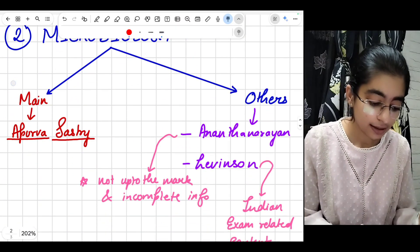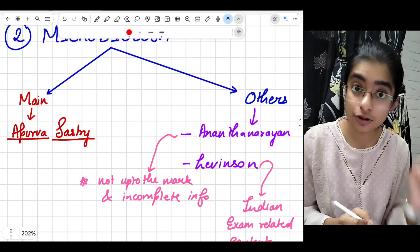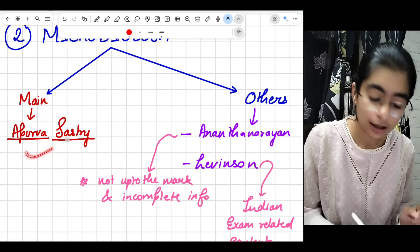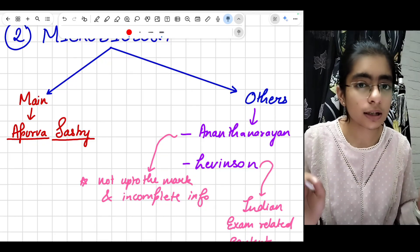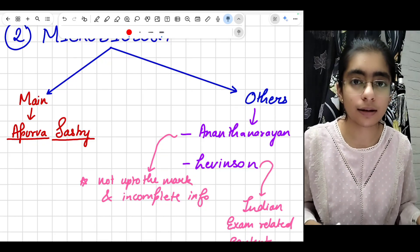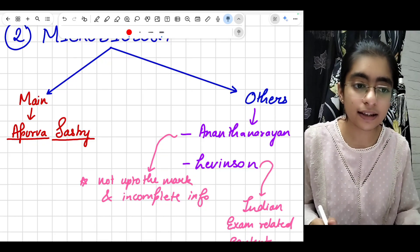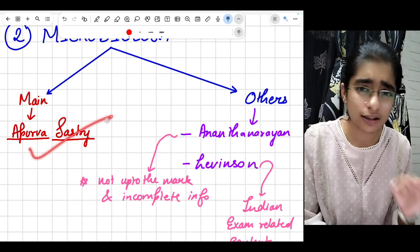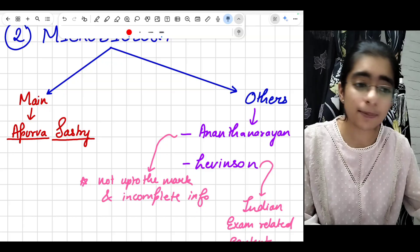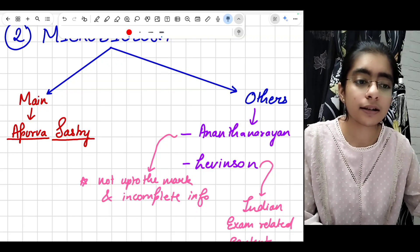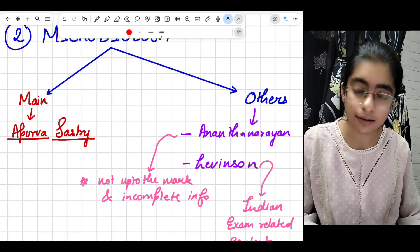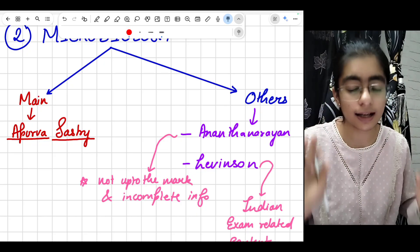Second is microbiology. The main resource which you need to buy is Apoorva Shastri. No other book other than Shastri is available in the market right now which can suffice and contain all the information which is needed. It contains all the vaccine treatment and the lab diagnosis in detail and organism information also in detail. Everything is there. You just need to follow it as your gold standard.